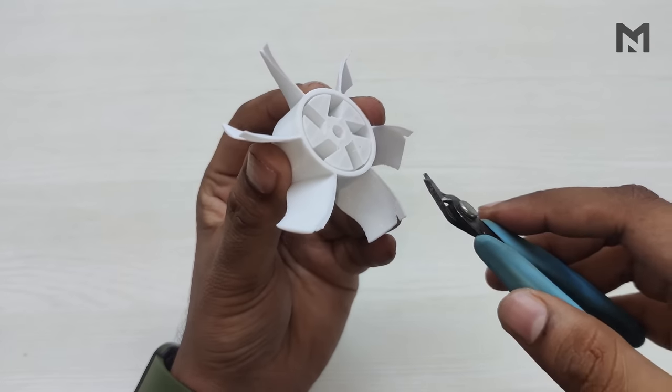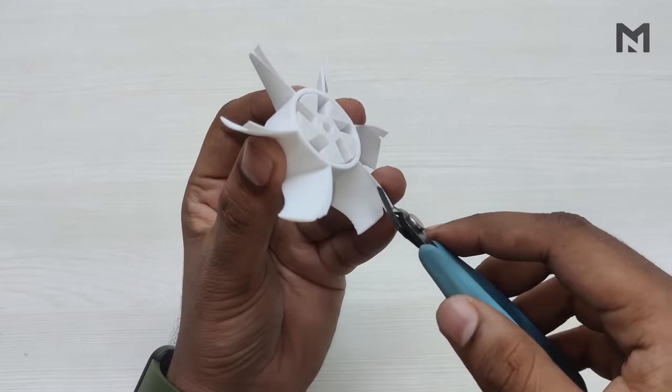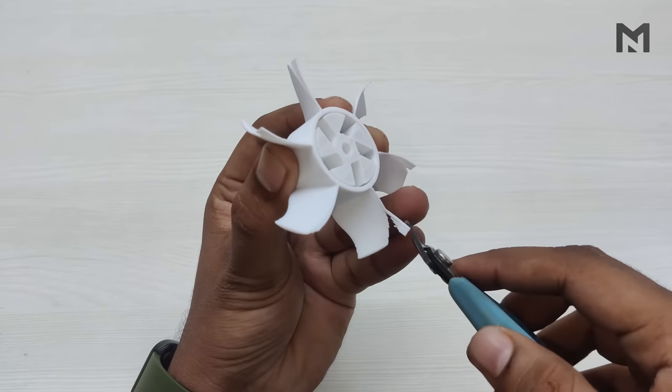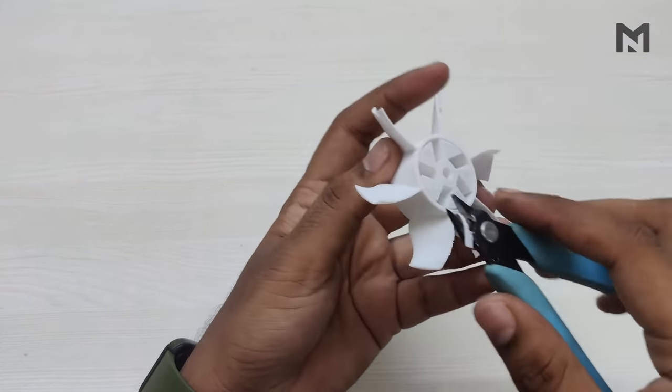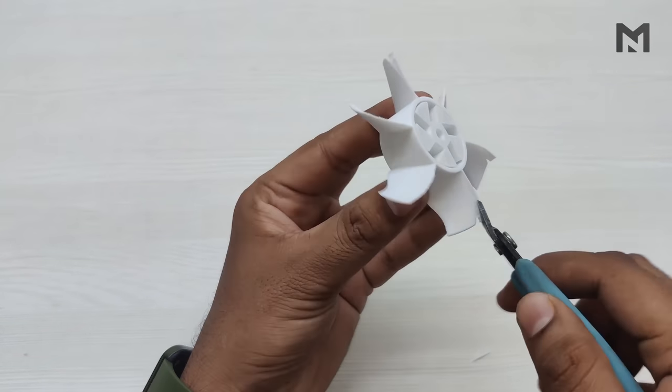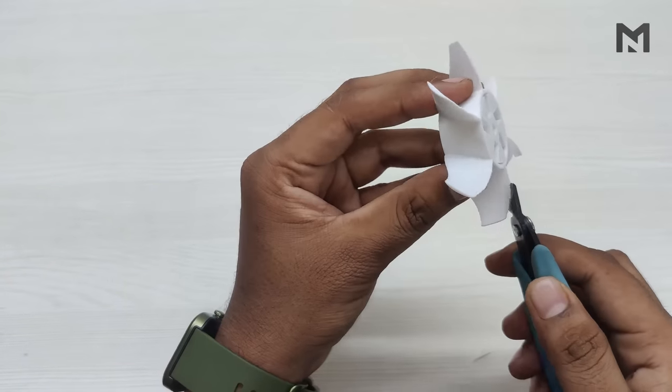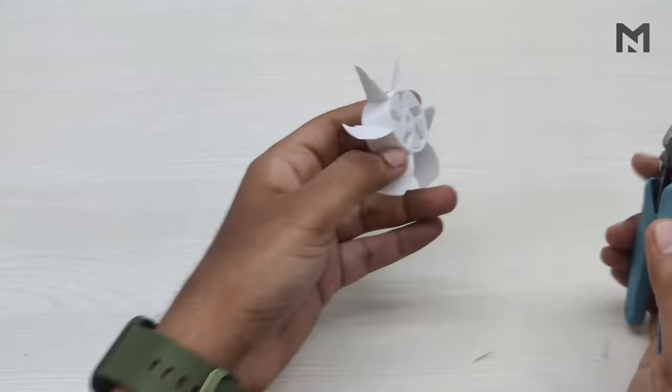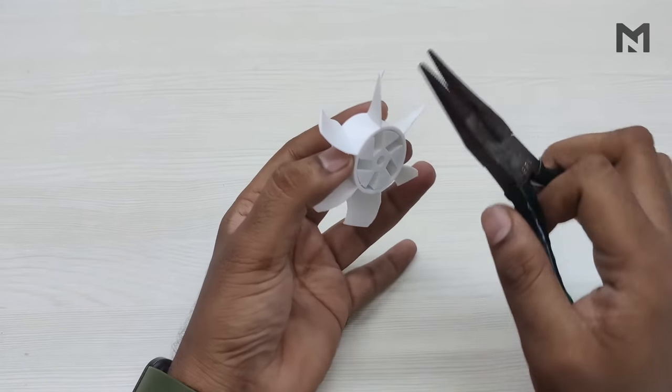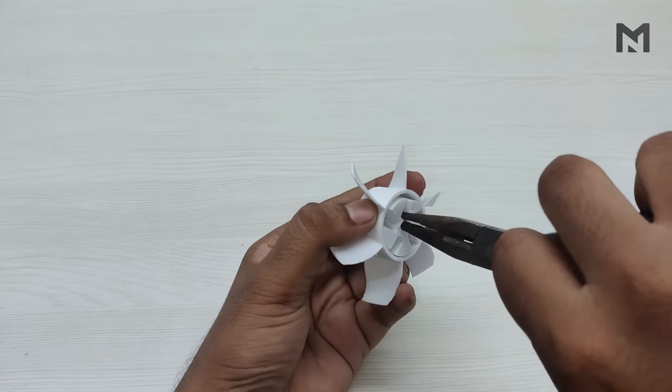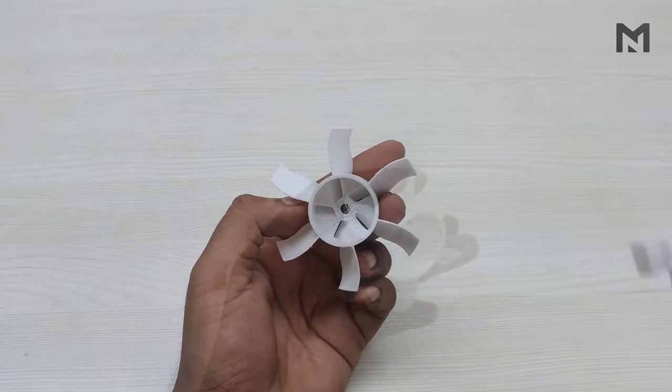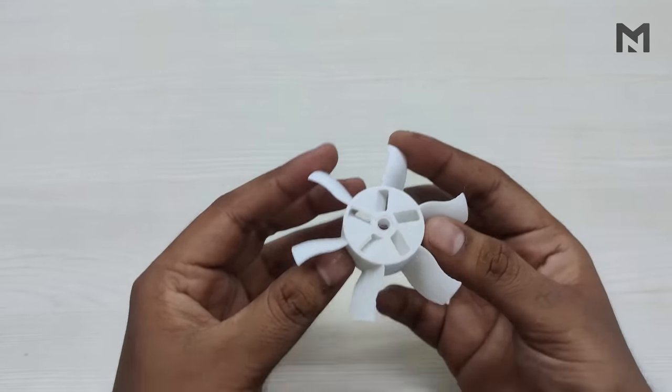Place the wire cutter on the support and cut it carefully. Make sure not to cut the blade. Then remove all the support material from the six blades. To remove the hub support, place the nose plier inside the support and twist it. After twisting it two to three times it will come out, and now the propeller is ready.